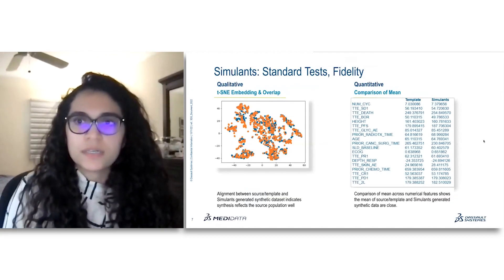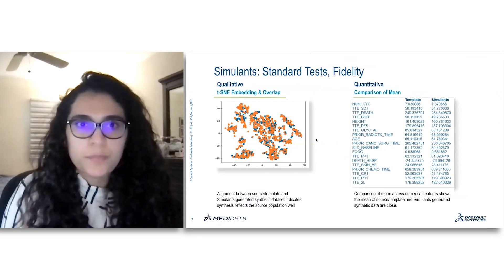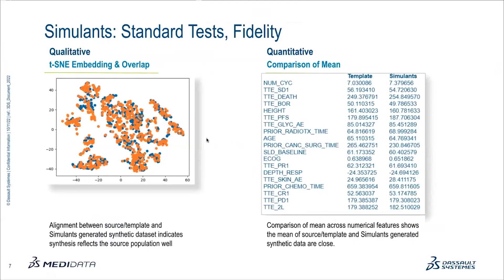When comparing the fidelity of the synthetic data to the source data, we use a number of different tests. The quantitative tests include looking at the overlap of the clinical trial data sets in a low-dimensional space. Here is an example using t-SNE. Simulants synthetic data is shown in orange, the source data in blue, and we can see that because of the decent overlap between the two data sets, the synthetic data does seem to be representing a similar population.